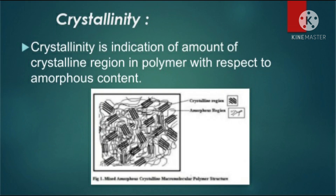Crystallinity is the indication of the amount of crystalline region in a polymer with respect to amorphous content. The crystalline region is the region where all the polymer molecules are in an aligned condition. If we see the diagram represented here, the highlighted parts show the polymer molecules which are in a line condition — this region is called the crystalline region.